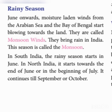Rainy season. From June onwards, moisture-laden winds from the Arabian Sea and the Bay of Bengal start blowing towards the land. They are called monsoon winds. They bring rain in India. This season is called the monsoon, as we experience this season nowadays.